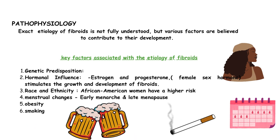Let's talk about the pathophysiology. The exact etiology of fibroids is not fully understood, but various factors are believed to contribute to their development: genetic predisposition or family history, hormonal influence — estrogen and progesterone, female sex hormones, stimulate the growth and development of fibroids. Race and ethnicity — African American women have a higher risk. Menstrual changes such as early menarche and late menopause, obesity, and smoking are also contributing factors.